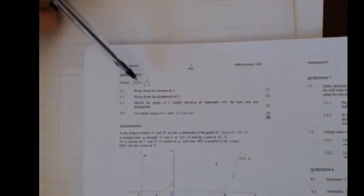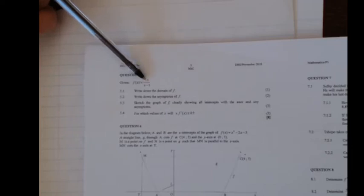Good day, learners. In this video, we are going to look at question 5 of the November 2018 question paper, given the function f(x) is negative 1 over x minus 1. So this is clearly a hyperbola question with the x under the line of the fraction.